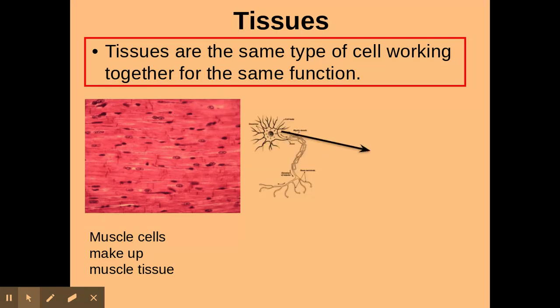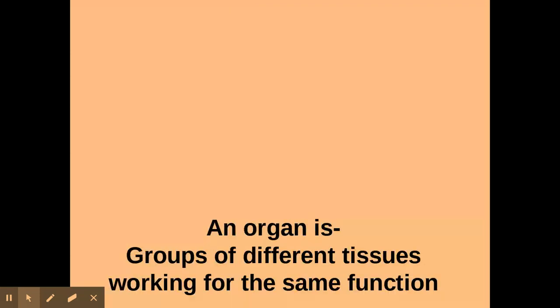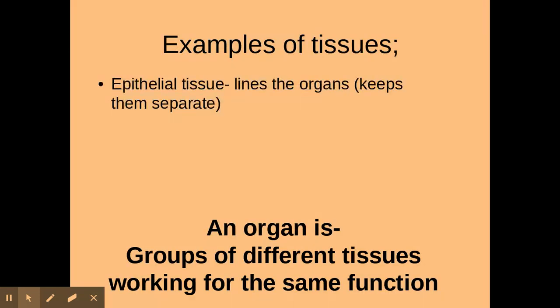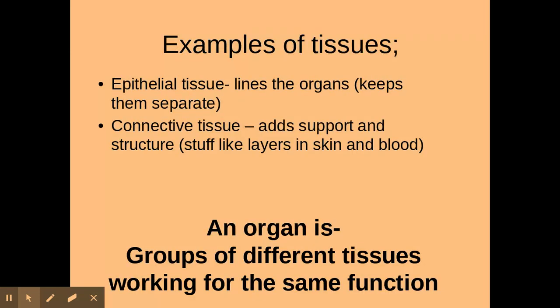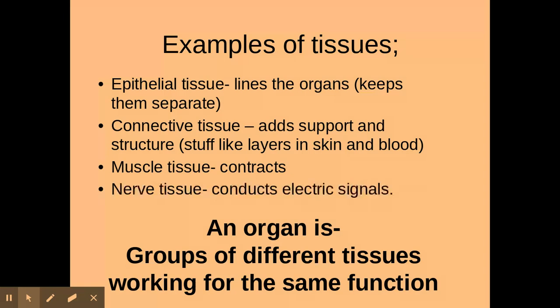Here I have a nerve cell which, when grouped together, makes up nerve tissue — again all working together for the same function in terms of communication. Now an organ — so first of all, tissues are some examples we need to be aware of — an organ is a group of different tissues working for a similar function.